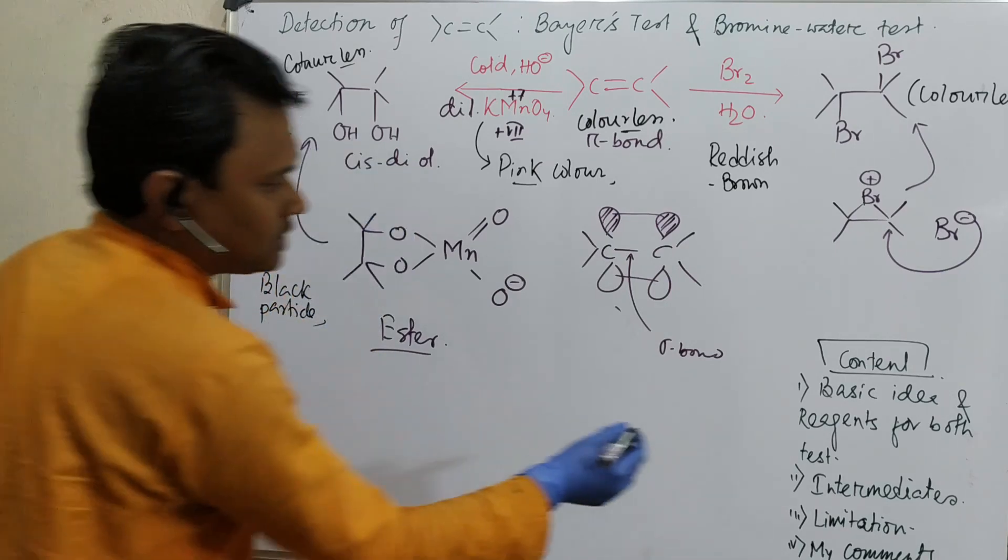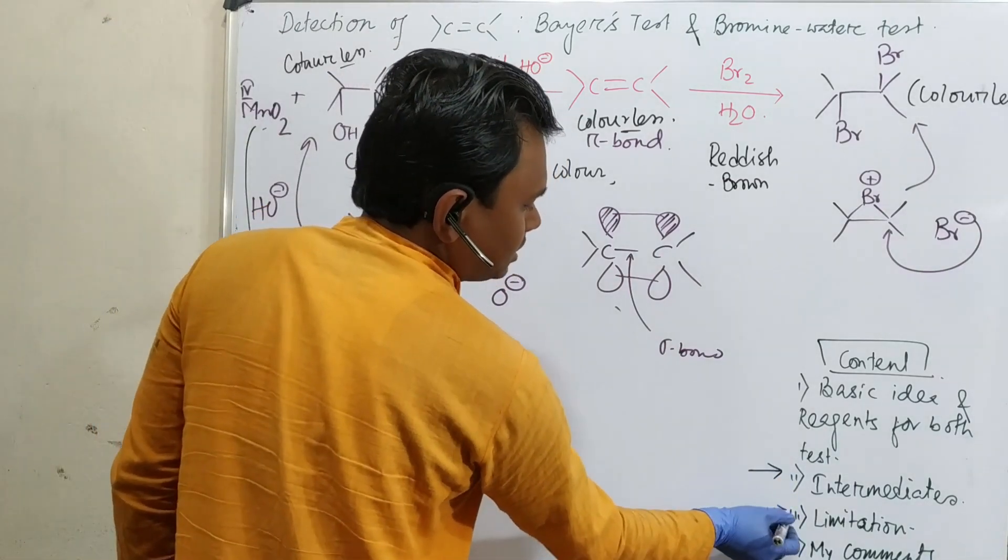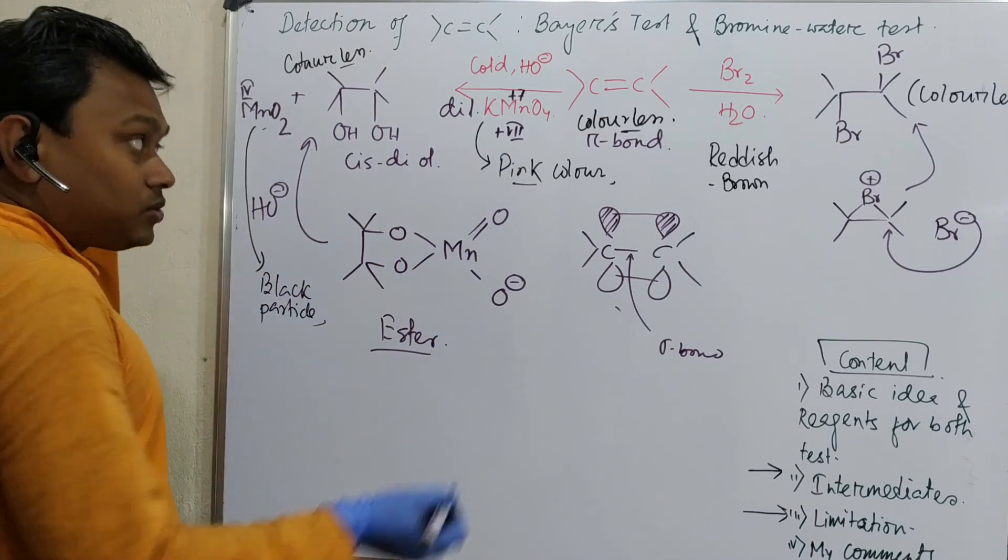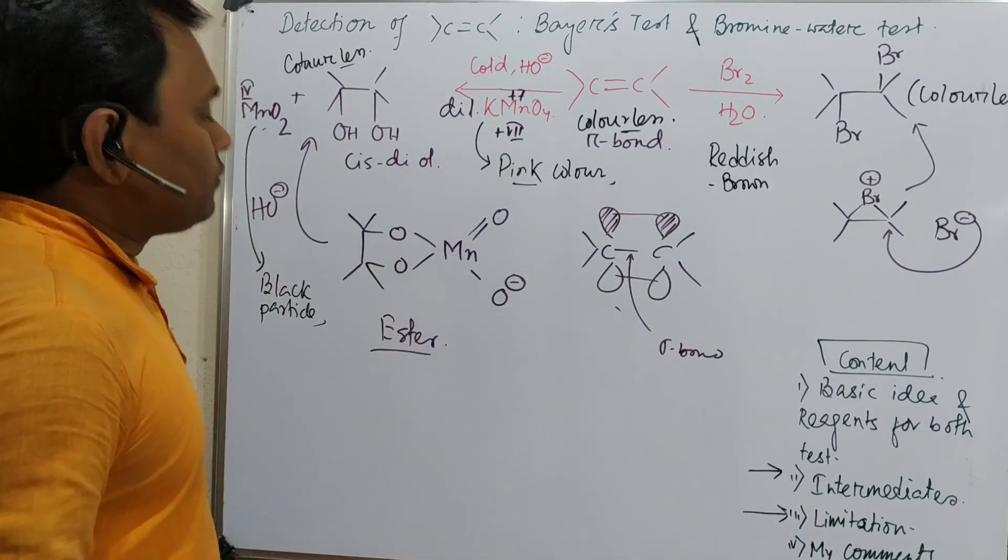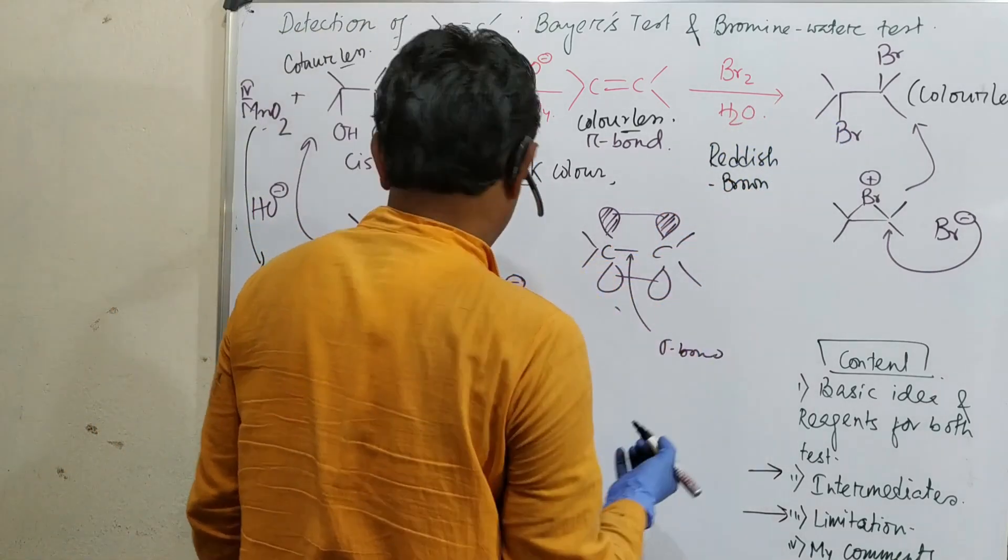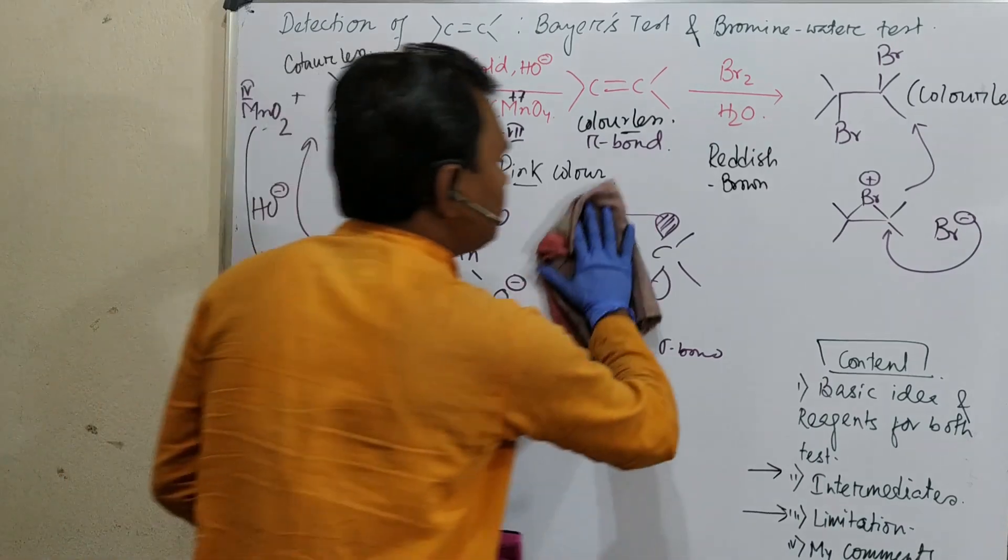So what have we learned about this? We have discussed the reagents. Now let's come to the limitations. Limitations of these methods: first of all, if there is another reaction from bromine.